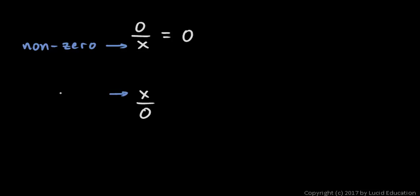And any non-zero number — so x here is some number other than 0 — over 0 basically evaluates to infinity. So this is also not an indeterminate form. Infinity isn't a number we can plot on the number line, but we know what the function is doing if it's approaching infinity — it's growing without bound. So if we're evaluating a limit and we get either of these results, we should stop there, and that is simply the answer.